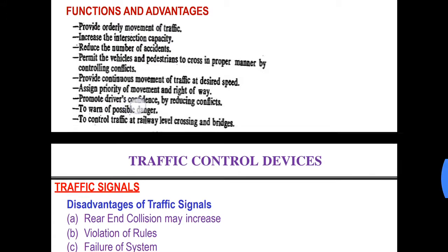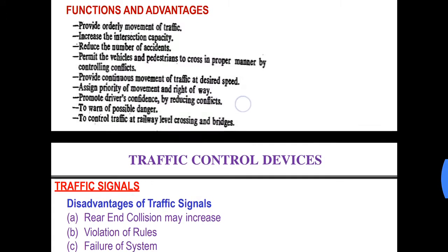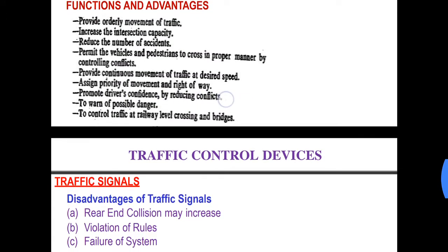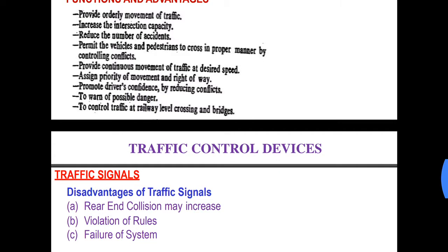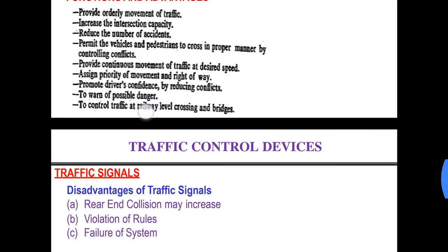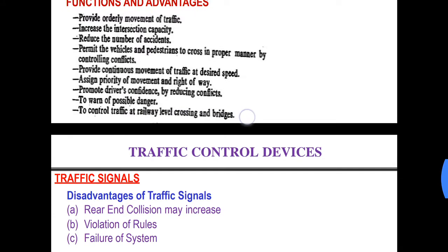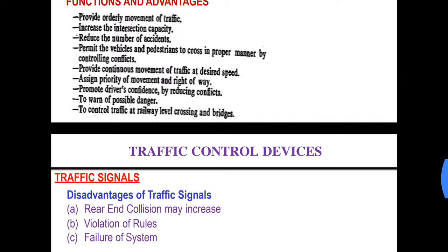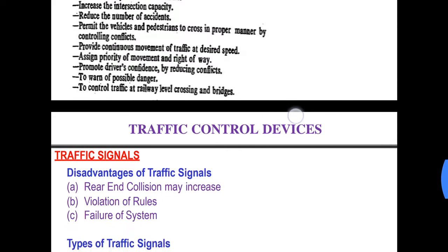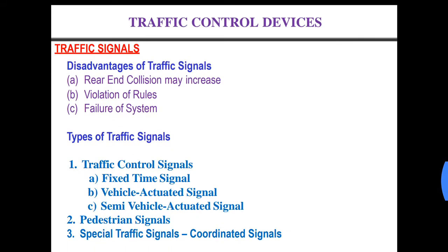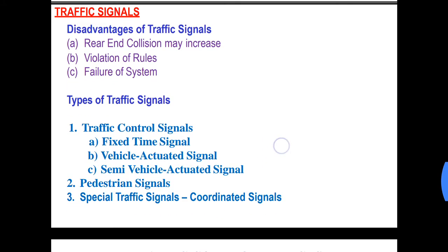Traffic signals promote driver confidence by reducing conflicts, warn of possible danger, and control traffic at rail level crossings and bridges. These are a few functions or advantages of traffic signals.